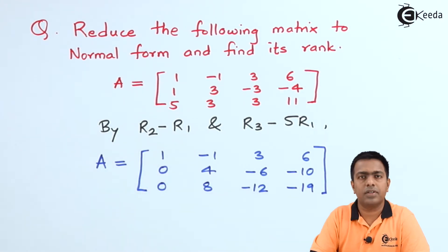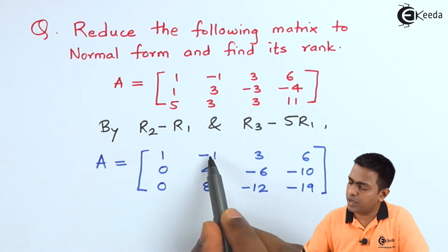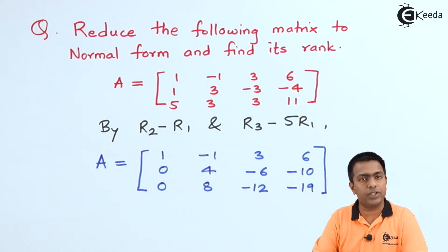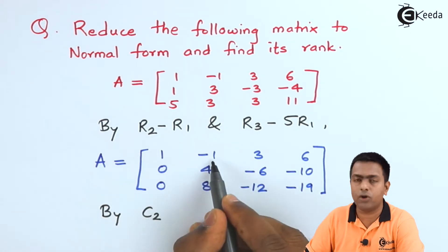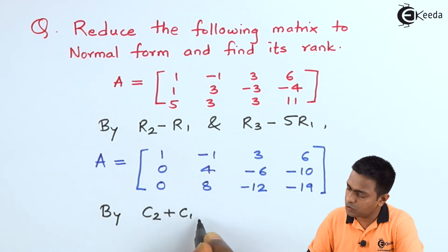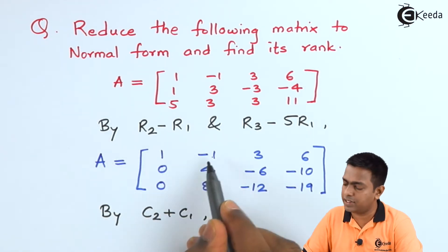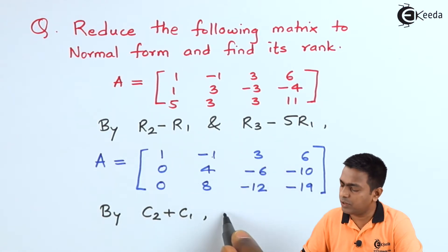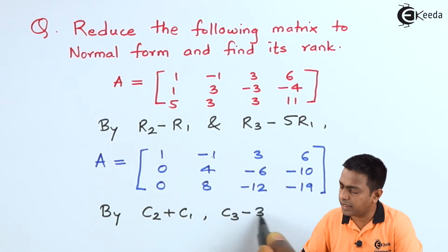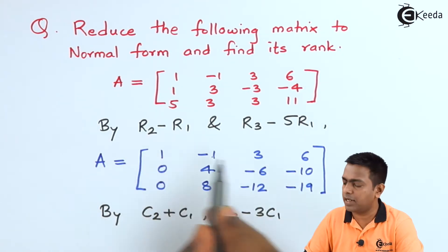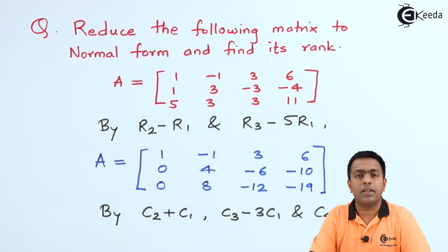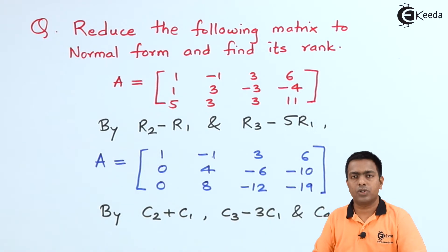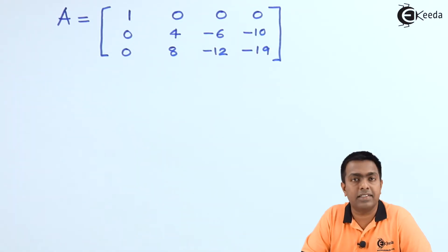Now bring zeros in the first row using column operations. Do C2 plus C1 so that -1+1=0. Then C3 minus 3×C1 to get zero there, and C4 minus 6×C1 to get zero there. By doing these three column operations we get zeros across the first row.